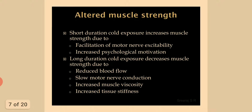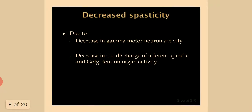Altered muscle strength: Short-duration cold exposure increases muscle strength due to facilitation of motor nerve excitability and increased psychological motivation. Long-duration cold exposure decreases muscle strength due to reduced blood flow, slow motor nerve conduction, increased muscle viscosity, increased tissue stiffness, decreased spasticity, decreased gamma motor neuron activity, and decreased discharge of afferent spindle and Golgi tendon organ activity.